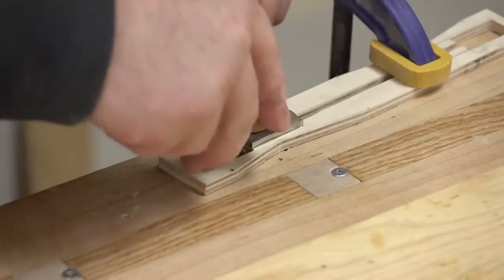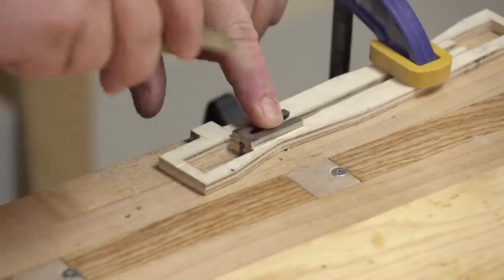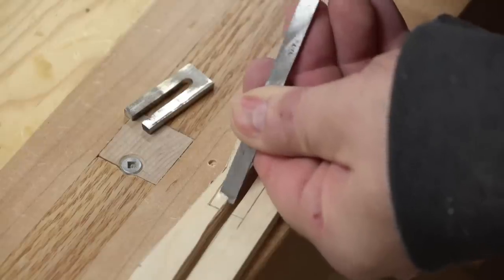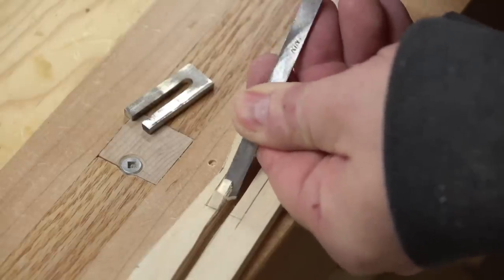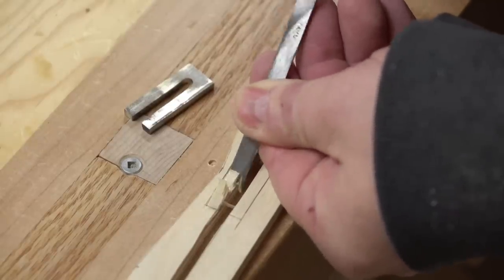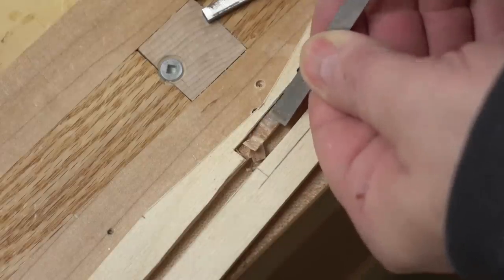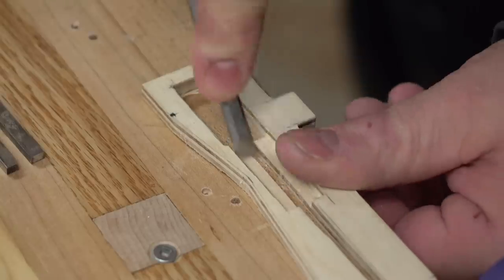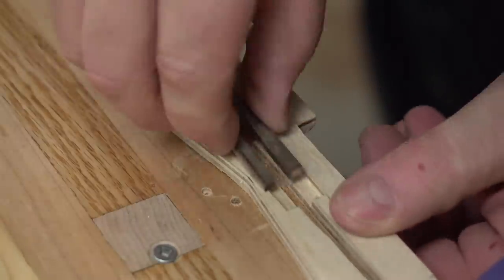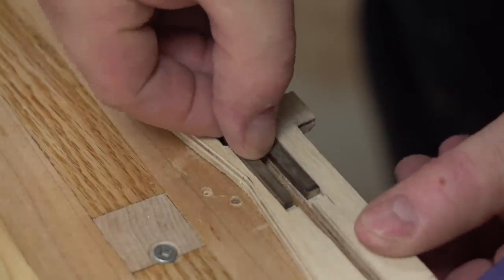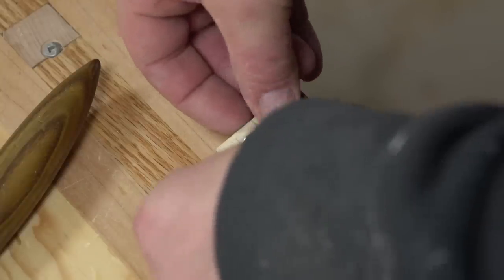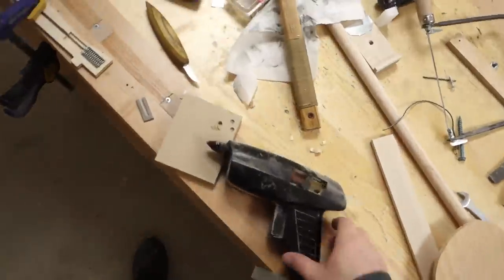Then it's back to the launcher to cut out the recesses where the bullets will fit and slide back and forth. So far so good. I can put the springs in temporarily with hot melt glue and test the mechanism.